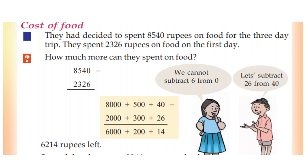Cost of food: They had decided to spend 8,540 rupees on food for the 3-day trip. How much money did they decide to spend? 8,540 rupees. They spent 2,326 rupees on food for the 1st day.